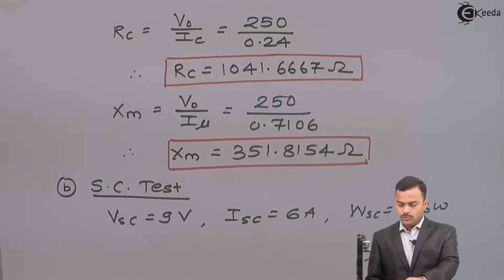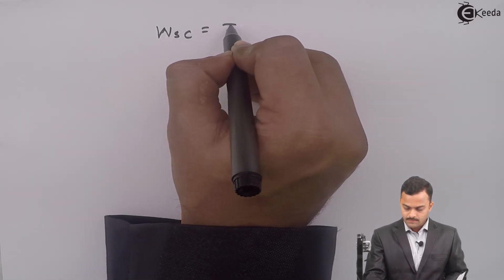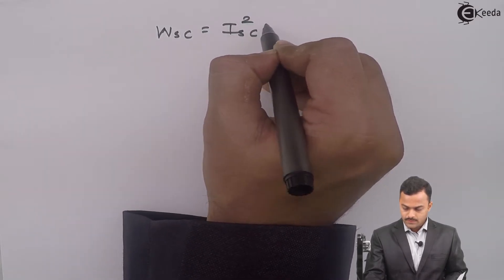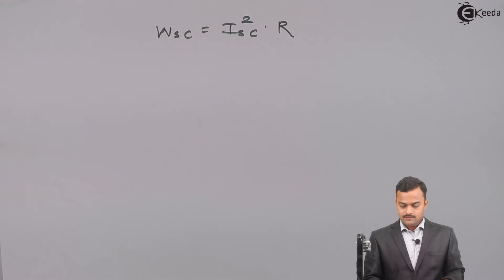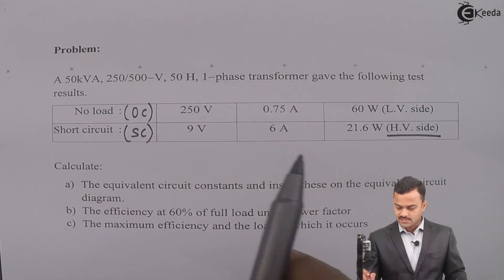In short circuit test, we know the power is nothing but copper loss. So WSC is ISC square multiplied by resistor. But which resistor depends upon where the test is performed.